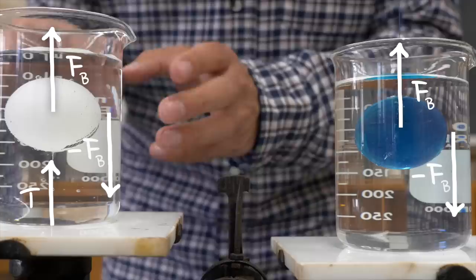Whereas for the hanging ball, the weight increases by the weight of water it displaces. So obviously this beaker is going to end up being heavier.